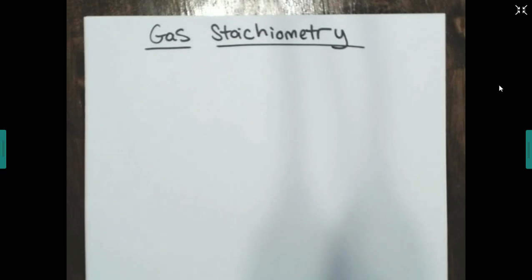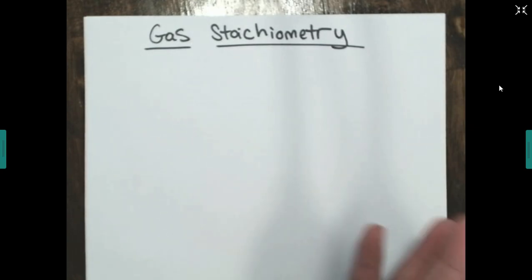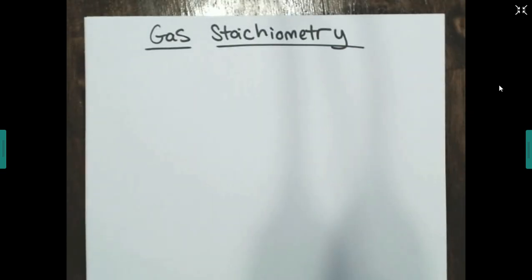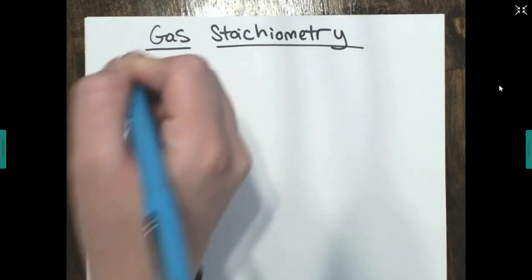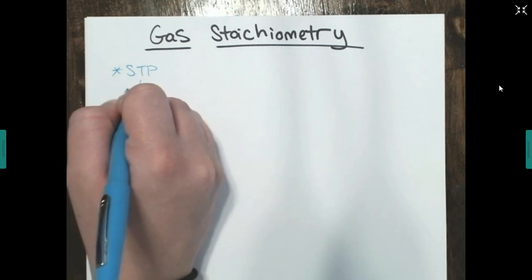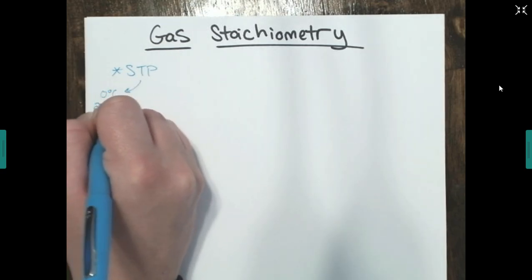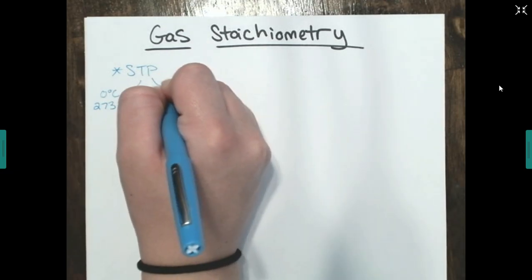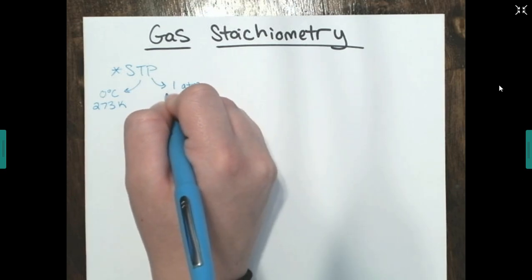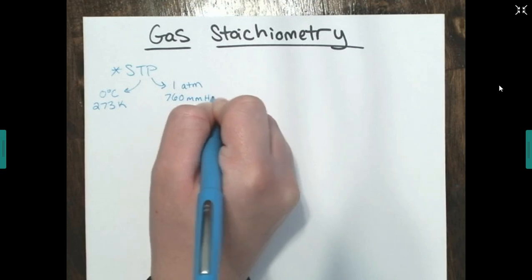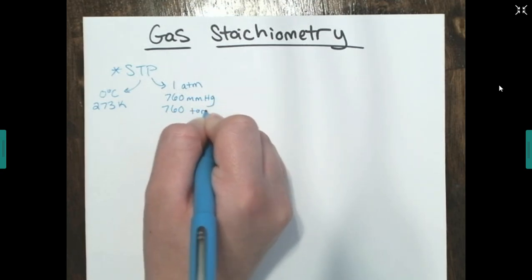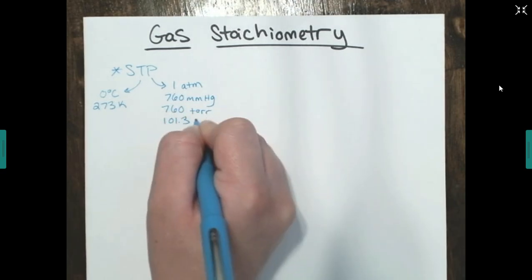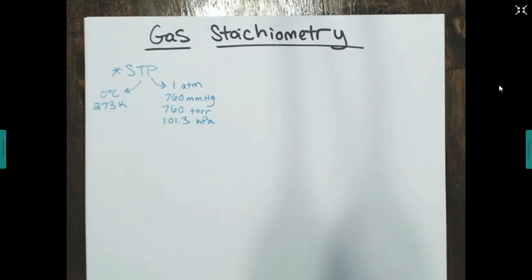You guys do need to take notes, so pause and go get something to write with if you don't already have something. If I'm talking too slow you can put me on double speed, and if I'm talking too fast you can pause and go back. First thing I want to review is STP — standard temperature and pressure. Standard temperature is zero degrees Celsius, which is 273 Kelvin, and standard pressure is one atmosphere, which is the same as 760 millimeters of mercury, 760 torr, or 101.3 kPa.